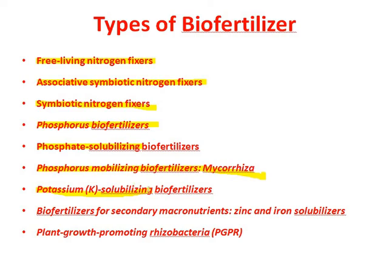Potassium solubilizing microbes make potassium available in solubilized form for plant uptake. Another important category is Plant Growth Promoting Rhizobacteria — PGPR. This is a very common term people use. When talking about types of biofertilizer, these terms will come up again and again — nothing falls outside these groups.